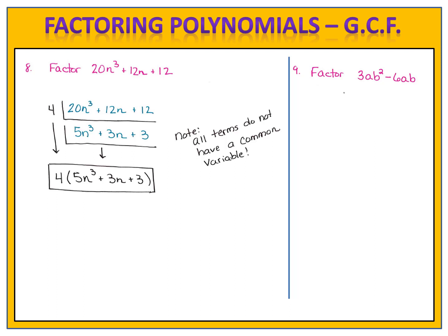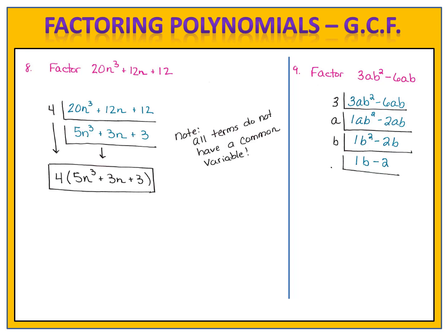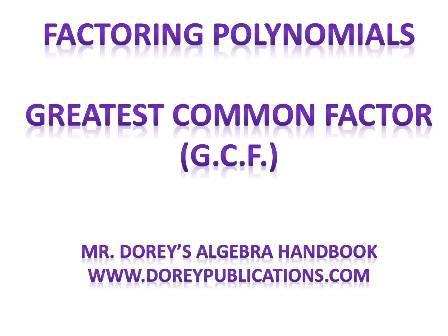In exercise 9, we have 3ab squared minus 6ab. We begin by looking at the numbers 3 and 6. The largest number that divides both is 3, so we factor out a 3 and divide both terms by 3. We then look at our variables — we have a in both of them, so we factor out the common a. Then I see I have b squared and b, so I factor out the common b, leaving me with simply 1b minus 2, or just b minus 2. The factored form is 3ab times b minus 2. And now you know how to factor polynomials using the greatest common factor. For more information, see the factoring section in Mr. Dory's Algebra Handbook, available at www.dorypublications.com.